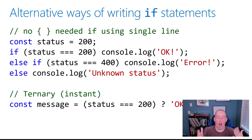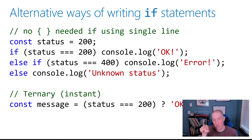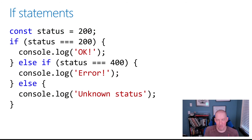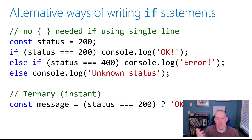It's worth highlighting that in JavaScript, similar to languages like Java, C#, and TypeScript, if what you're doing is a single line of code, you can actually skip the curly braces. So you can write: if status equals 200, console.log 'ok', then the else-if and else right below. That gives the exact same logic in slightly less space. Some developers like this, but I personally don't use it because it can lead to potential errors later on.